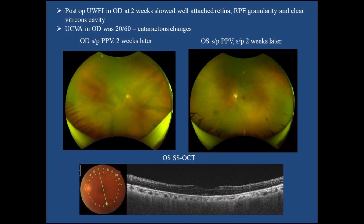At 2 weeks follow-up, uncorrected visual acuity in OD was 20/60 with some cataract progression. Fundus showed attached retina and clear vitreous cavity. Fundus in OS was also stable. Swept source OCT of both eyes did not reveal any sub-retinal or choroidal lesions.